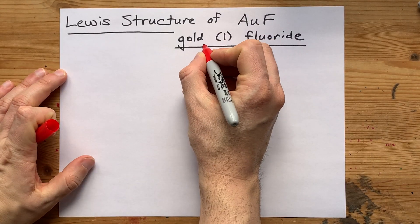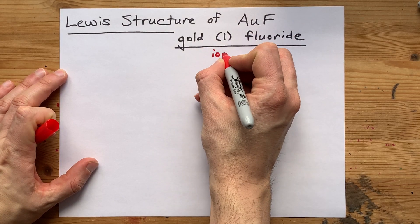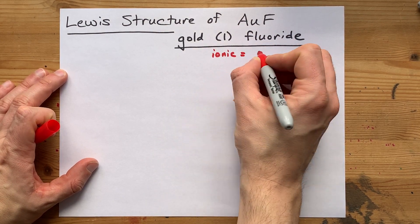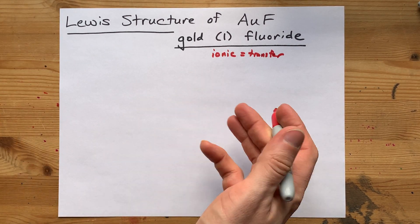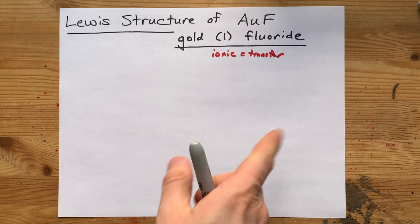The reason that's important is that metals and non-metals combine to make ionic compounds. That is a transfer of electrons from one to the other, from metal to non-metal.